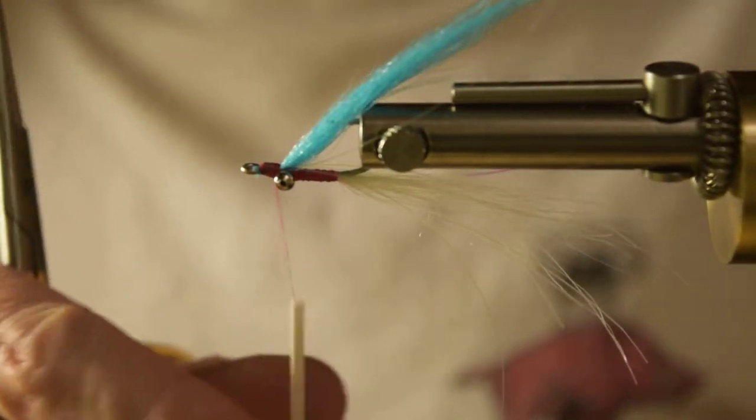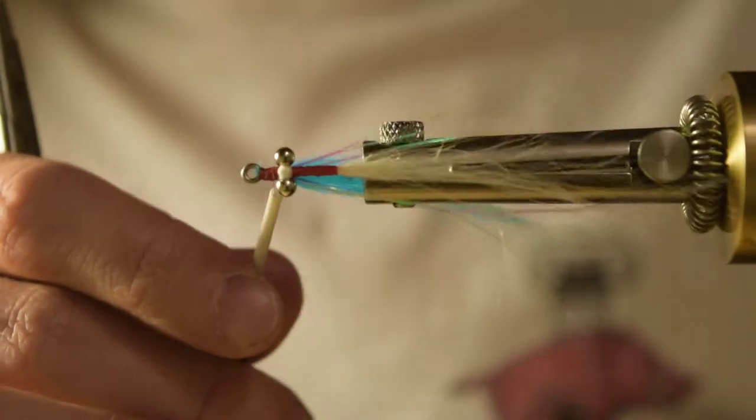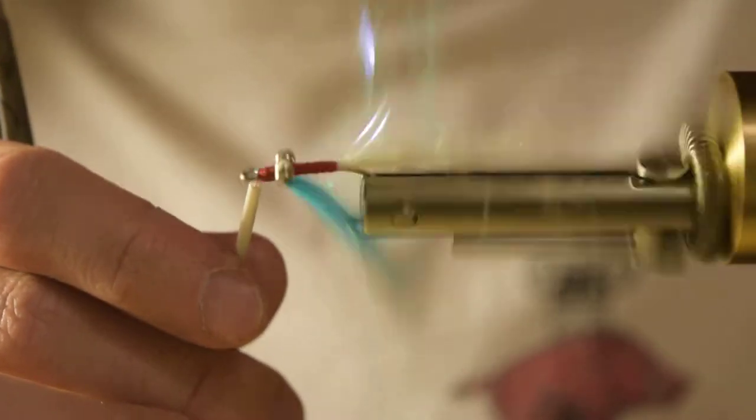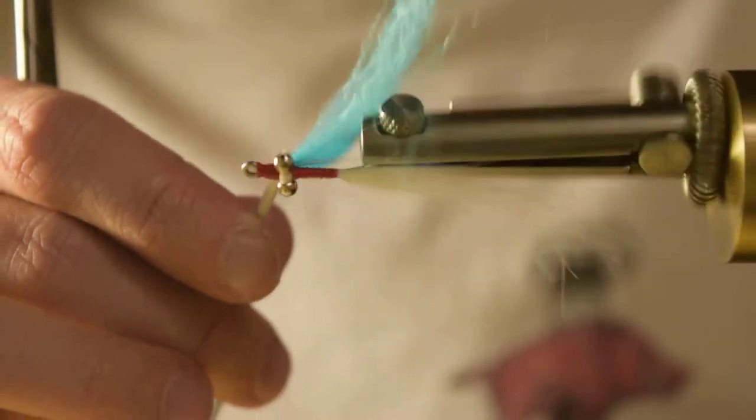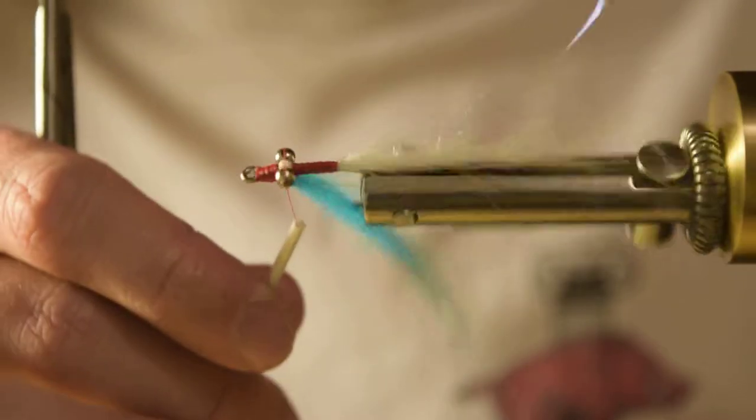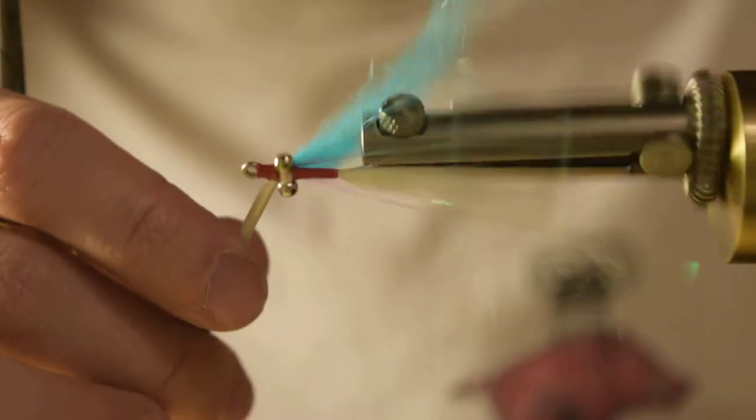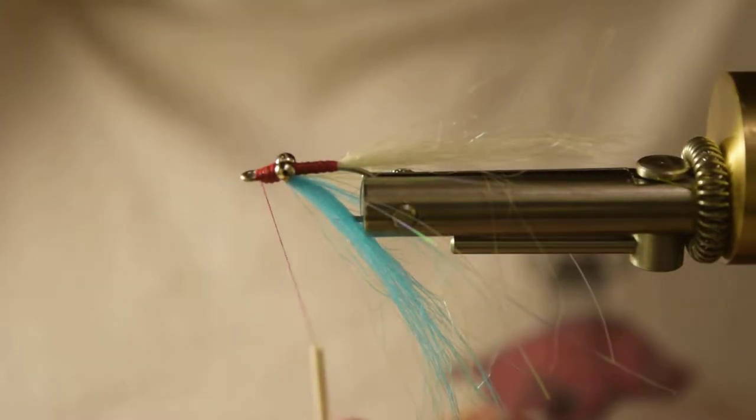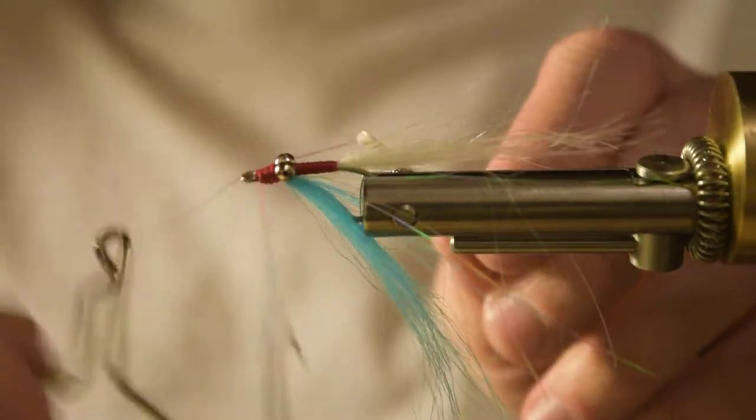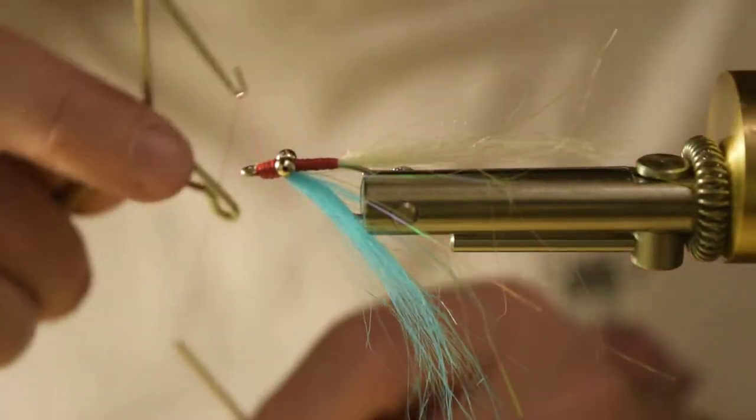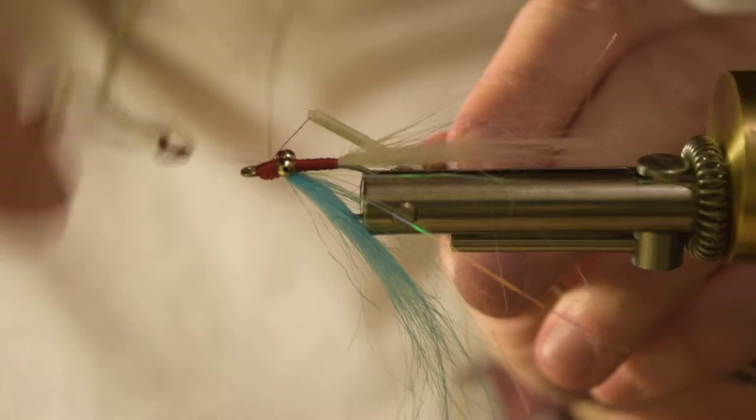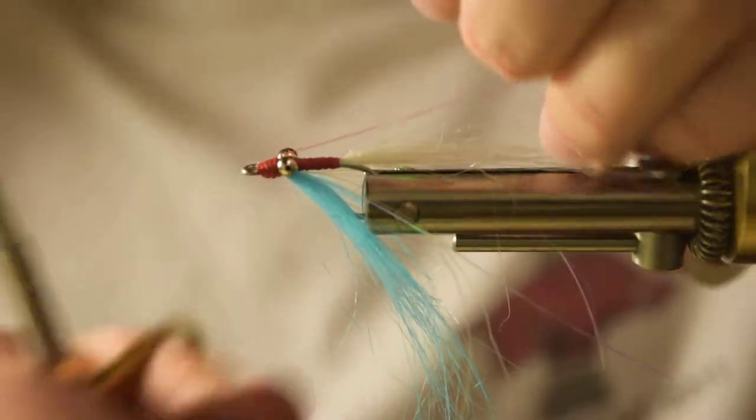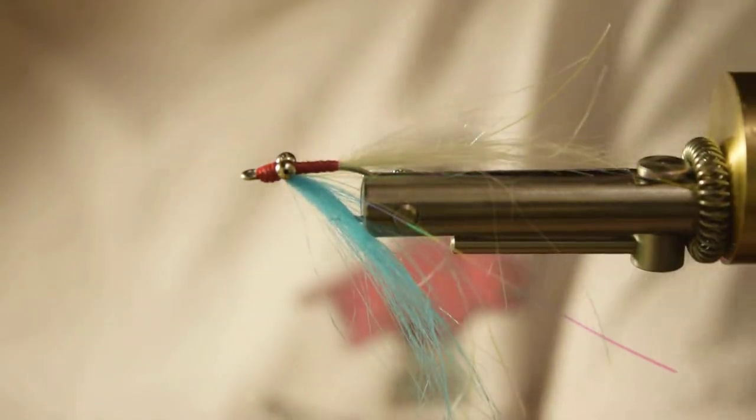So now all we have to do is cover up the head, make a nice thread head and cover up all that craft fur. The Nor-Vise in action here. So now I've got that done. Go ahead and whip finish. I'll usually do two, three turn whip finishes. Kind of a precaution. Probably unnecessary. Cut that guy off.